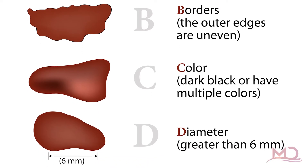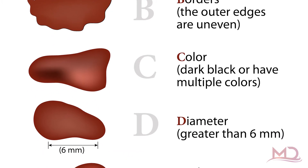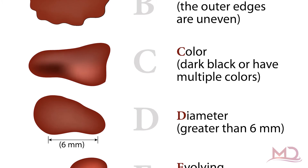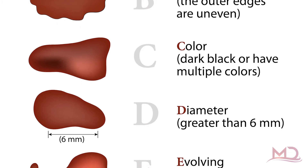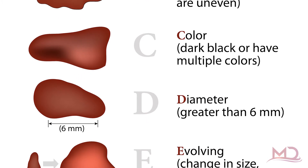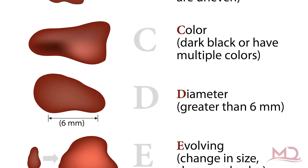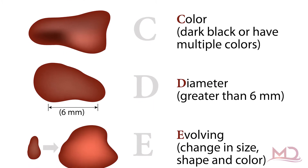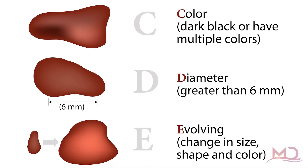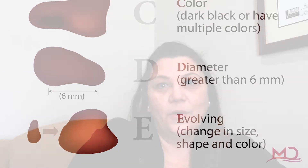D is for diameter — anything larger than 6 millimeters, which is basically the size of a pencil eraser, is sometimes concerning. And then we have E, which is elevated or evolving. So if you see changes to an already existing mole or lesion, that's something you want to definitely have checked out sooner rather than later.